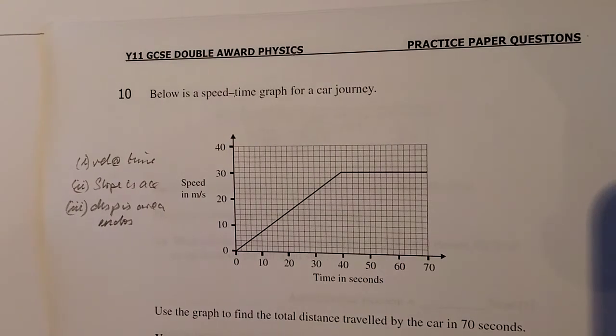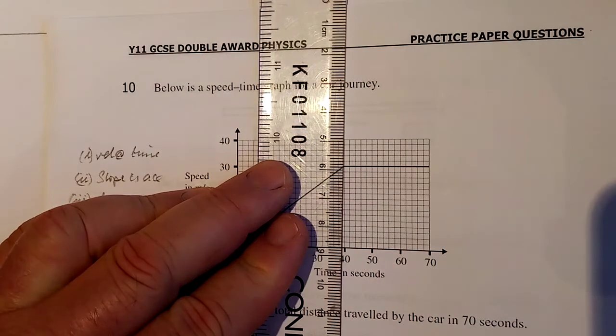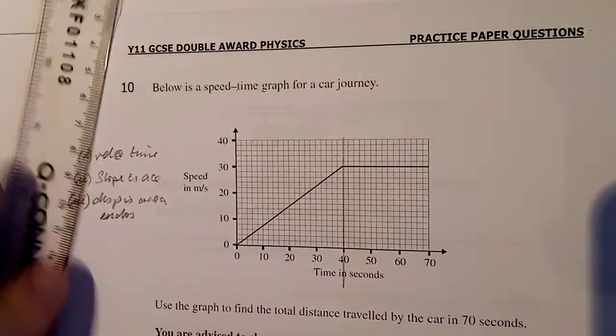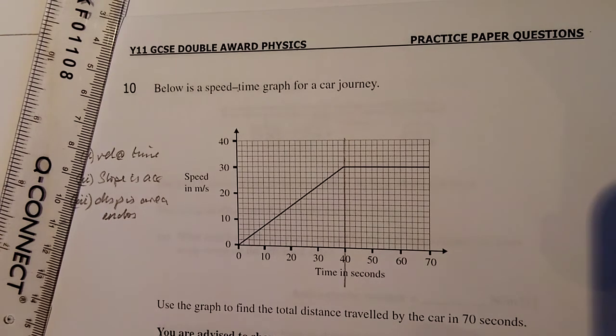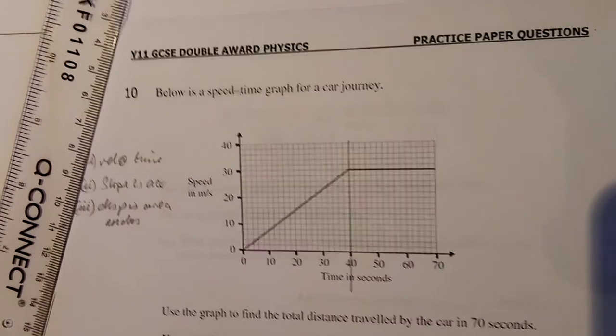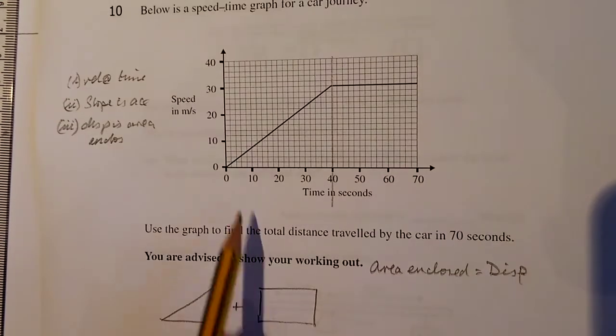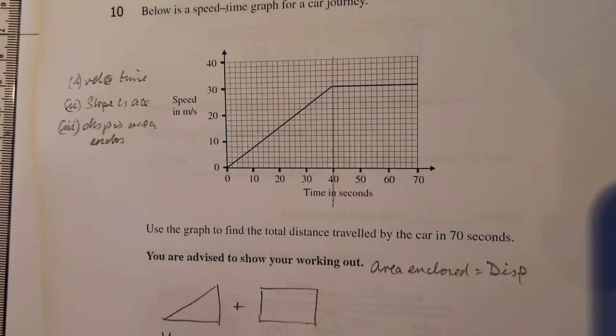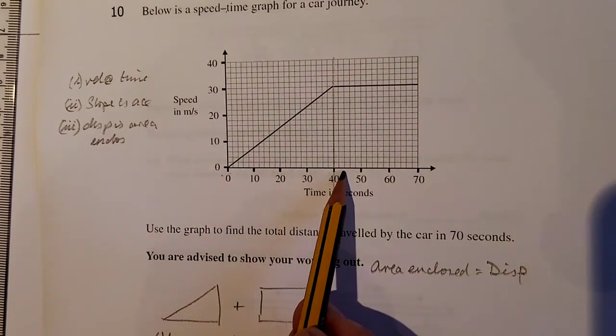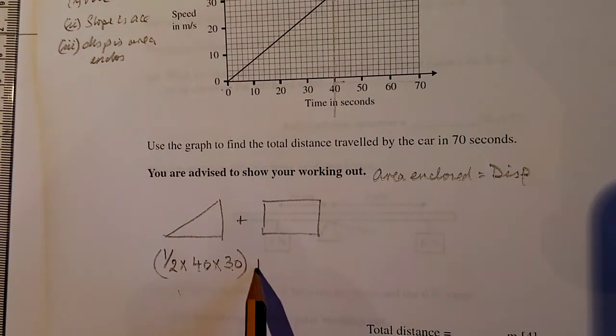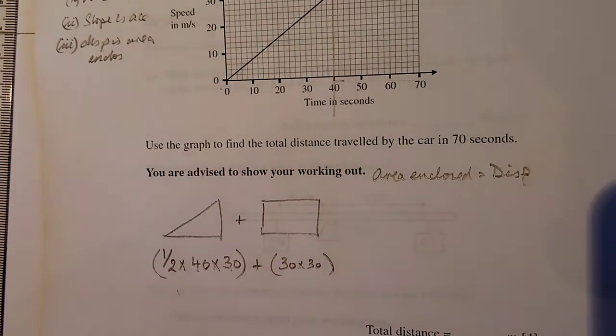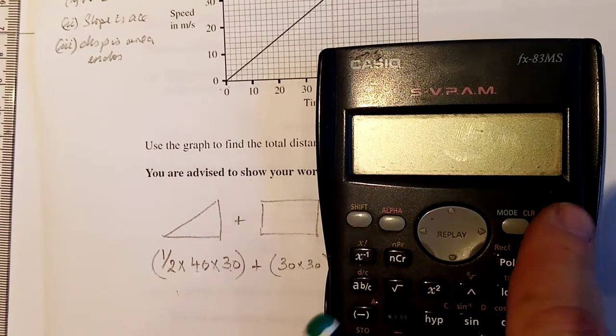Let's do the question. Use the graph to find the total distance travelled by the car in 70 seconds. Right. Again, I'm being careful here. I'm just reading off there with the graph. Do you see that? What did I use? I used a ruler. So I know I've got a triangle, and I know I've got a rectangle. So area enclosed equals displacement. There's probably a mark for that. I'm looking for four marks here. Look. Four marks. Where am I? There. So let's look at the triangle. Half the base by the perpendicular height. So a half times 40 times 30. That's that one done. Half of 40 times 30. And now this one. That one is going to be 30 times 30 plus 30 times 30.